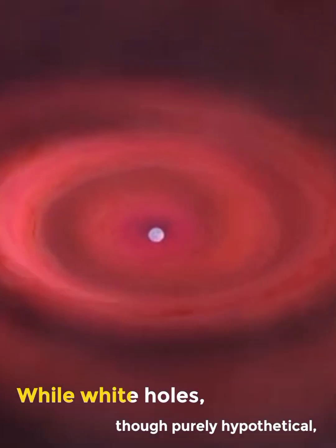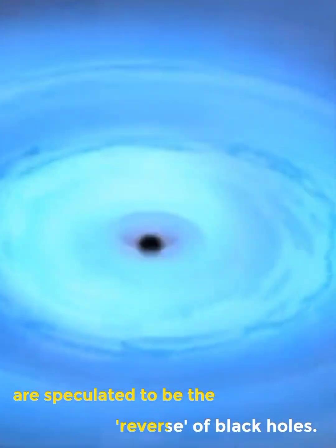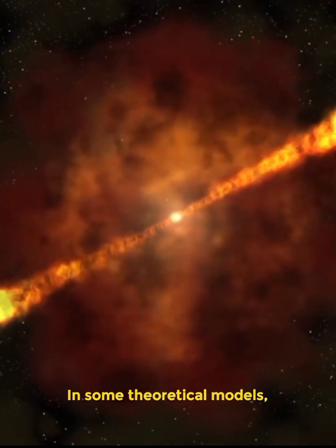Black holes form from the collapse of massive stars, creating an intense gravitational well. While white holes, though purely hypothetical, are speculated to be the reverse of black holes.